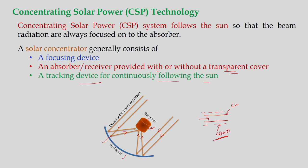We need a tracking device for continuously following the sun. In case of flat plate collectors, such tracking systems are not required — they are installed at a fixed location based on the latitude value throughout the year. But in case of concentrating collectors, we need to rotate the device based on solar radiation to capture solar radiation throughout the day.